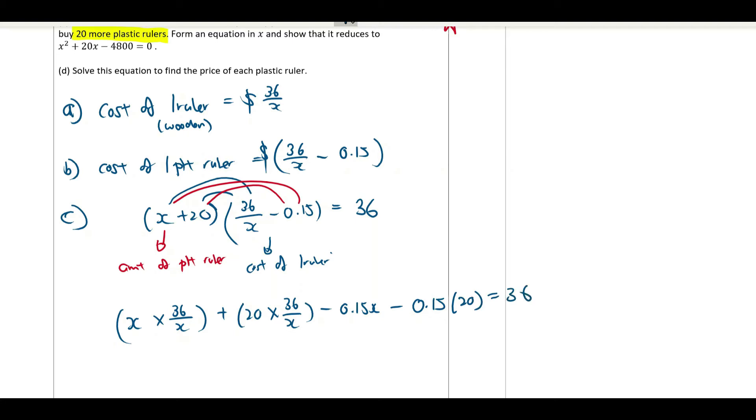X times 36 over X, cancel, cancel, you will just get 36. Plus 20 times 36 over X. This is numerator times numerator. 36 times 20 is 720 over X.